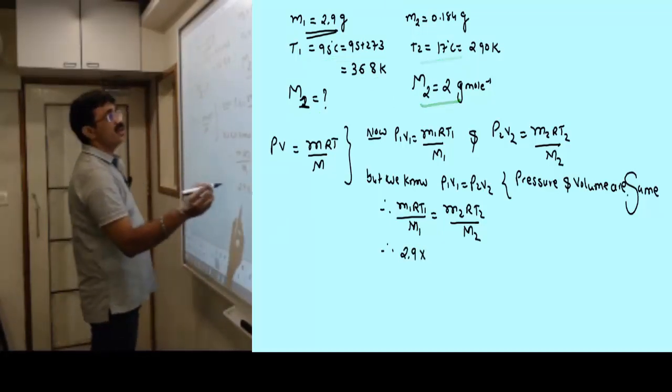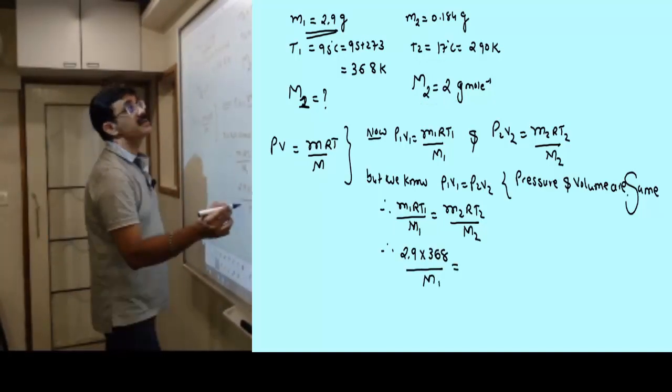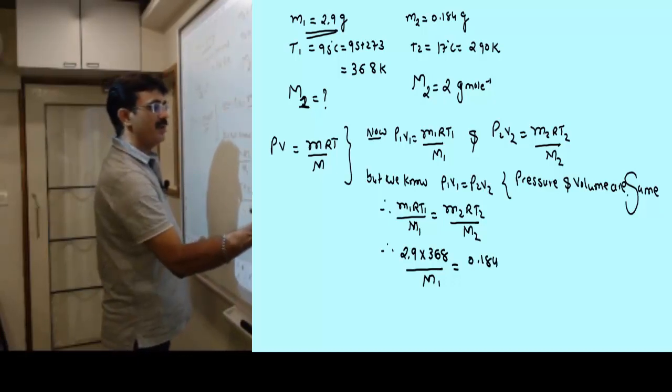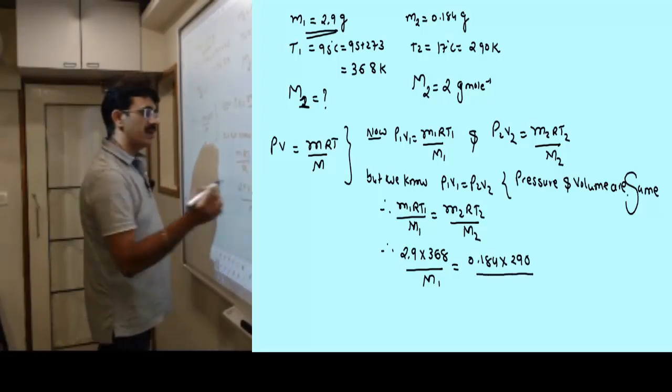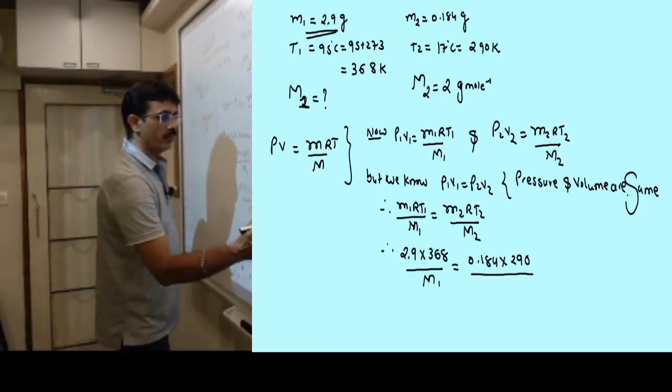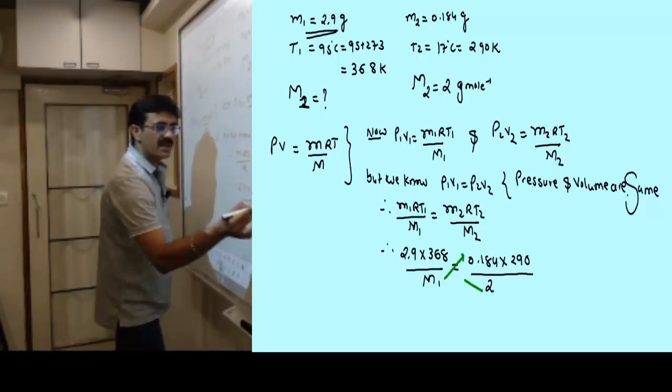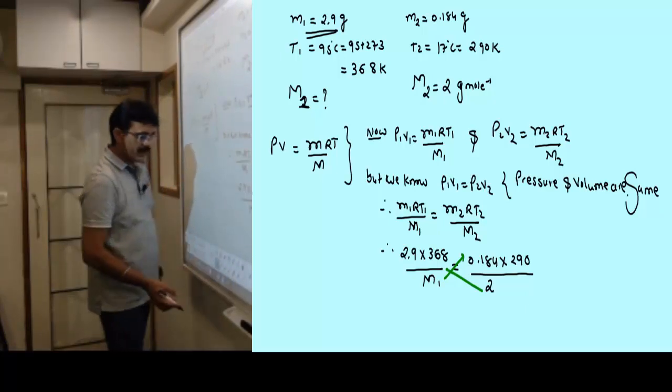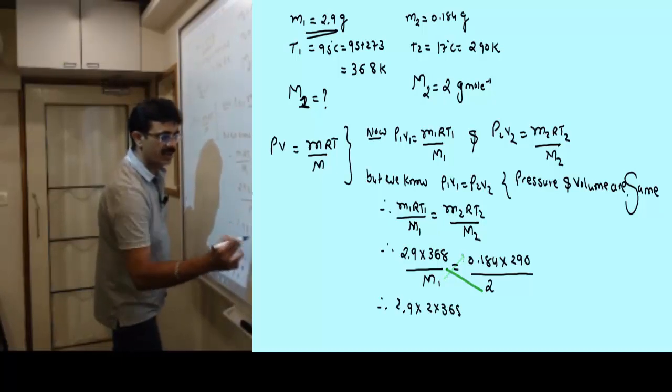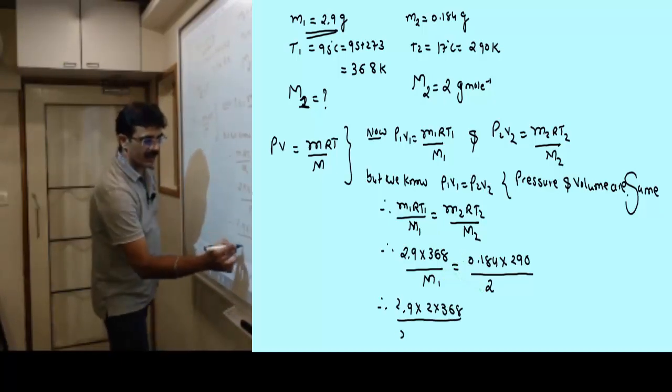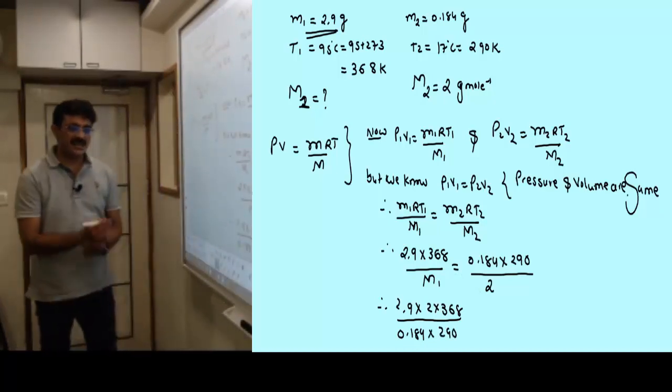You get 2.9, r cancels out, temperature t1 is 368, molecular weight we need to find. m2 is 0.184, t2 is 290, and molecular mass of hydrogen is 2.